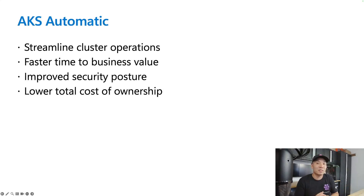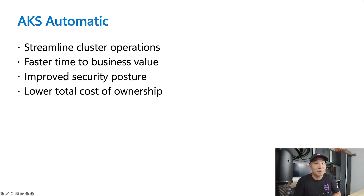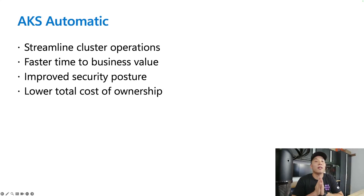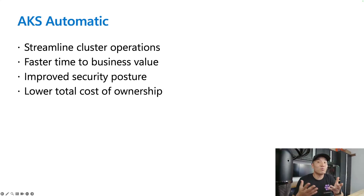This is a huge time saver and makes it way easier to get started with Kubernetes. Don't like how something was configured or need to install something else? Don't worry — you still have access to the Kubernetes API, so you can always work within the AKS Automatic cluster just like any other cluster. The AKS team has put a lot of thought into the design and the components installed by default, and determined this is the best configuration for most users. Your cluster will be ready to host your apps — a huge win for many AKS users.